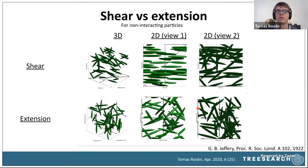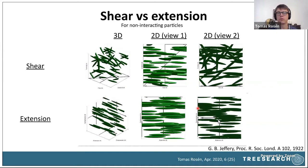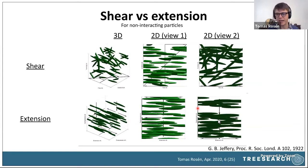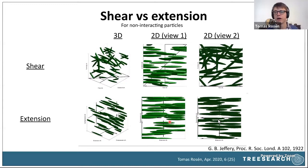In contrast, if you take the same random dispersion of particles and apply an extensional flow, the particles tend to align directly in the stretching direction. So if you want to obtain really high alignment of your particles, you want extensional flow rather than shear.